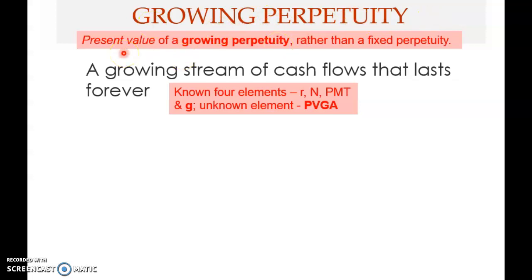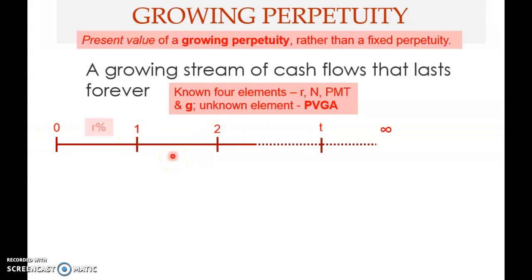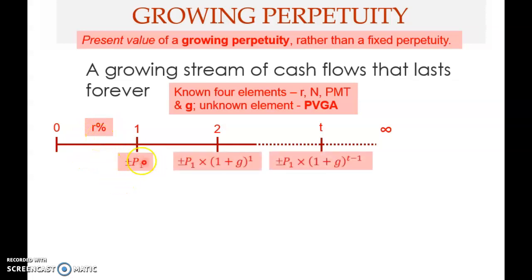For growing perpetuity, we look at the present value of a growing perpetuity rather than a fixed perpetuity. The four elements are: R (known), N = infinity, the payment P1 (known), and G the growth rate (known). The unknown is PVGP, the present value of growing perpetuity. On the timeline, N is infinity; payments are P1, P2 = P1×(1+G), and at time T the payment is P1×(1+G)^(T-1), continuing forever.